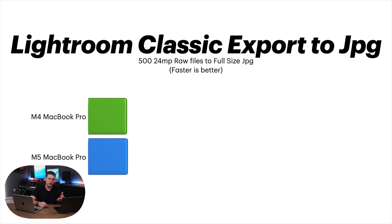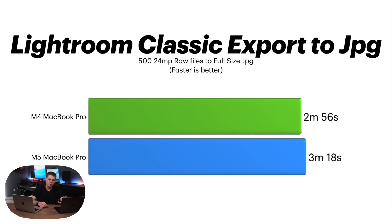The last test was the Lightroom Classic export test. I loaded about 500 RAW files and exported them all to JPEGs at 60% quality. On the M4 it took two minutes and 56 seconds, but on the M5 it actually took three minutes and 18 seconds. I ran the test over and over and it always took longer on the M5. I don't know if this is an Adobe optimization issue, but I do expect it to improve in the future.